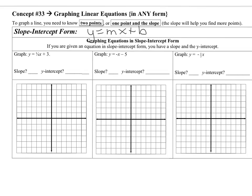That means the coefficient of x is one-fourth, and that is our slope. The y-intercept is the ordered pair zero, three. So I'm going to start at zero-three, go up three, put a dot there, and from that point I rise one, run four. So I'm going to rise one and go to the right.